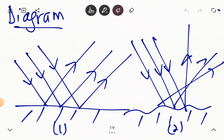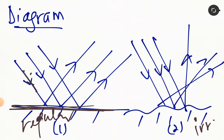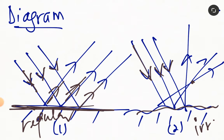Diagram 1 represents regular reflection and diagram 2 represents irregular or diffuse reflection. In regular reflection, the reflecting surface is smooth, so when parallel rays fall on the surface, the reflected rays also appear to be parallel — they move in the same direction and do not intersect. However, in irregular reflection, parallel rays fall on the rough surface and after reflection we have several points of intersection. That is what we mean by irregular reflection.